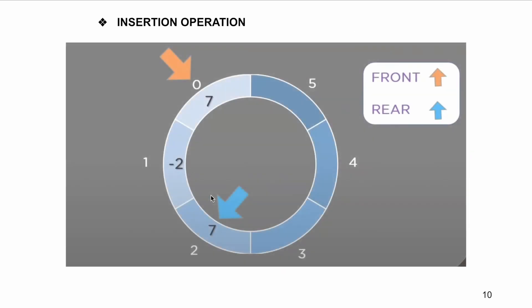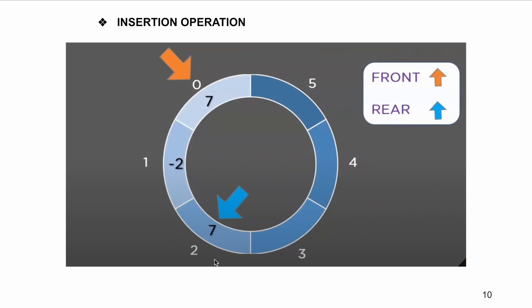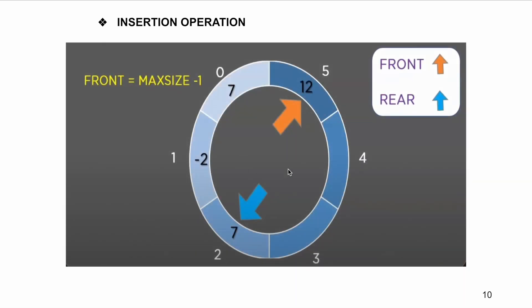Let's understand the insertion operations. The first type of insertion is straightforward — we increment the position of the rear pointer to insert a new element. The arrow shown in blue represents the rear pointer and the one in orange represents the front pointer. As we increment the rear pointer, a new element gets inserted. This is how insertion is done using the rear pointer.